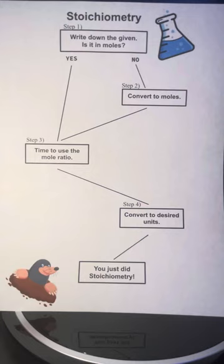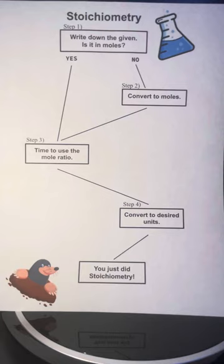To convert from grams, you write down the given grams and multiply it by moles over molar mass. To convert from liters, you write down the given liters and multiply by moles over 22.4 liters. To convert from molecules, you write down the given molecules and multiply it by 6.02 times 10 to the 23rd power, or Avogadro's number.